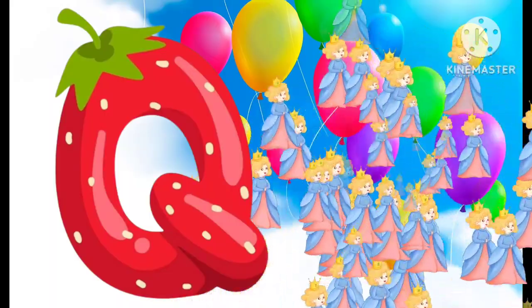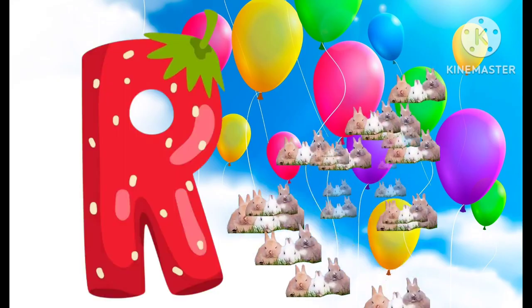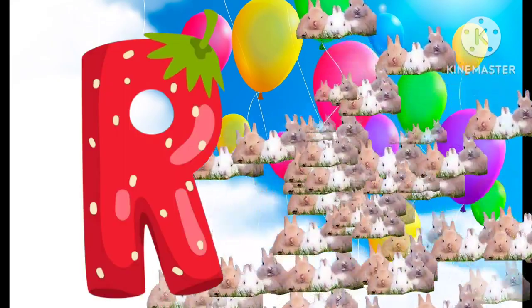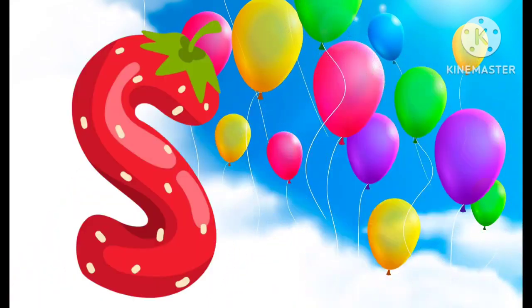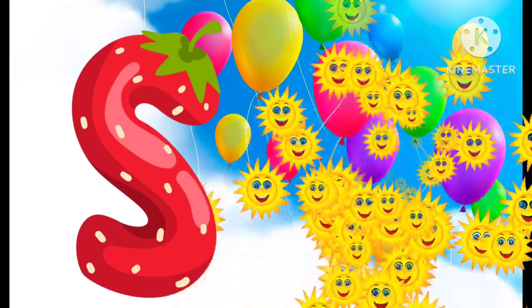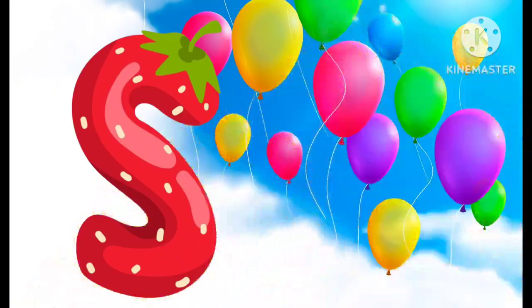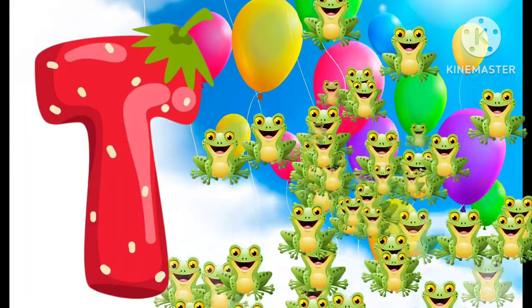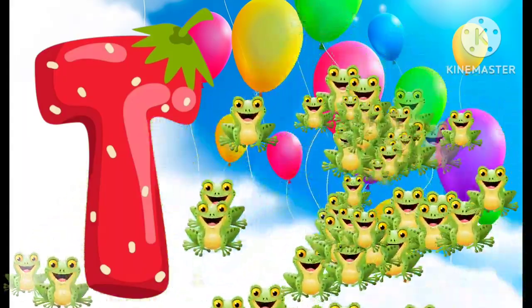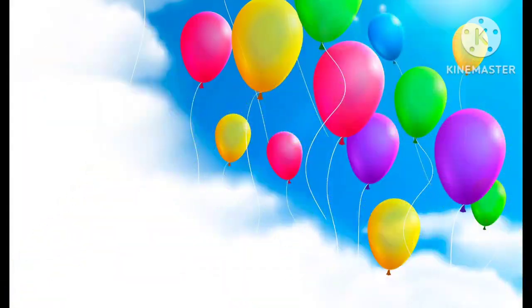Q is for queen, k-k-queen. R is for rabbit, r-r-rabbit. S is for sun, s-s-sun. T is for toad, t-t-toad.